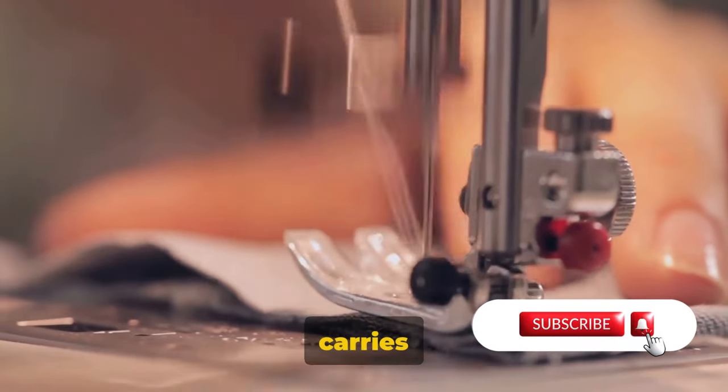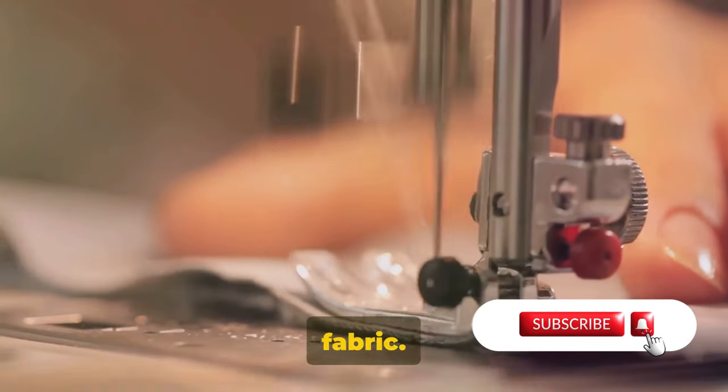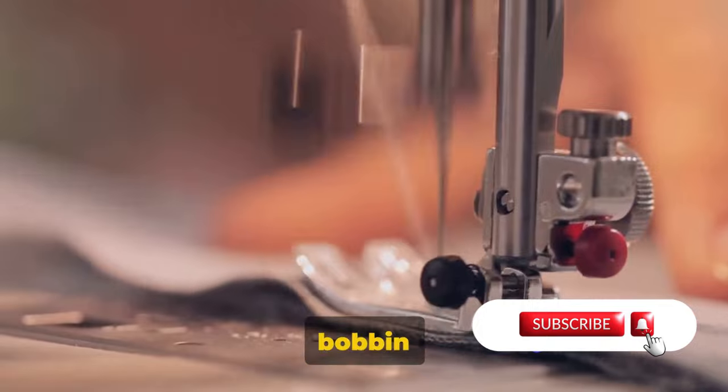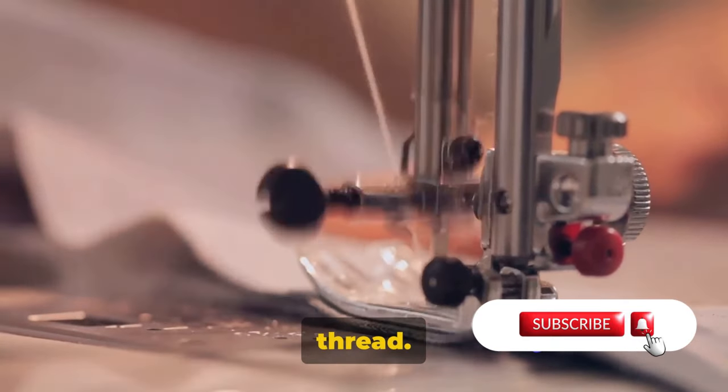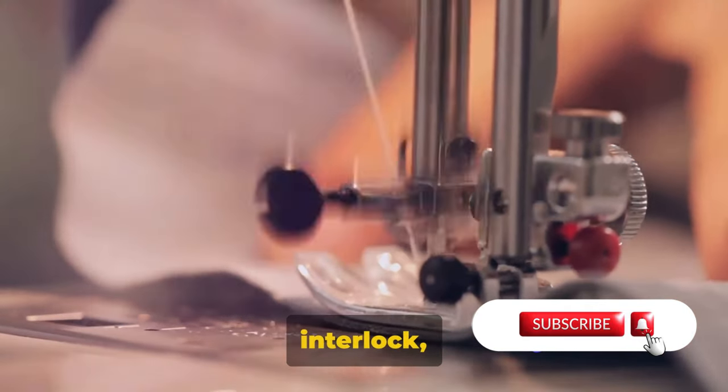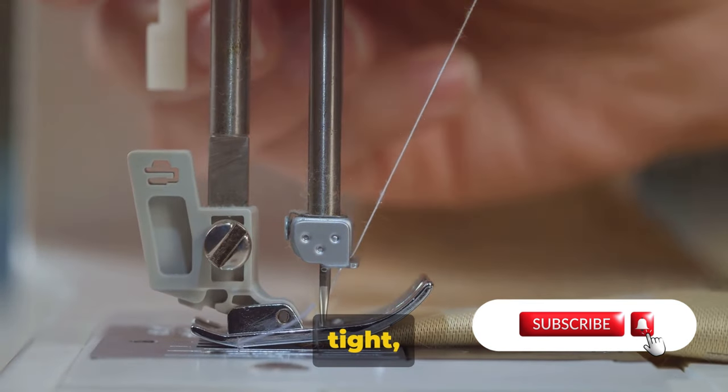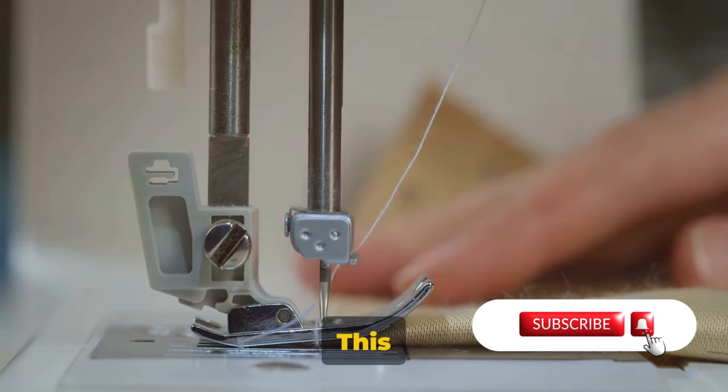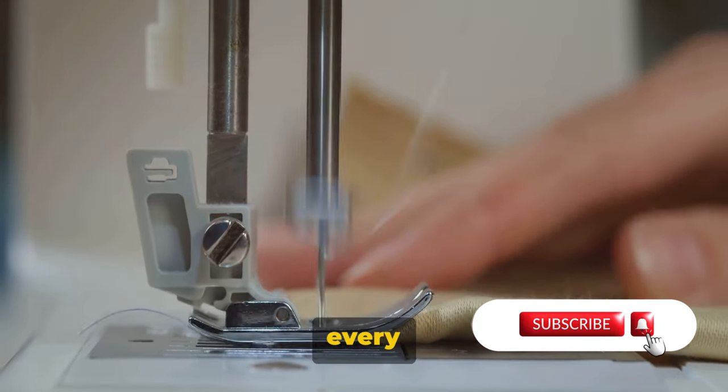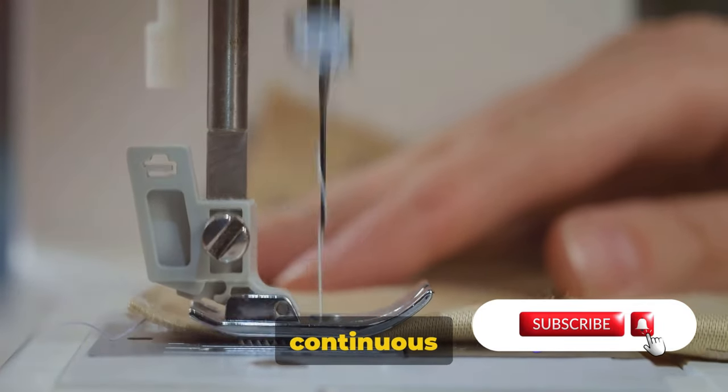As the needle descends, it carries the upper thread down into the fabric. At the same time, the bobbin spins, releasing the lower thread. The two threads then interlock, forming a stitch. As the needle rises, it pulls the threads tight, securing the stitch in place. This process repeats with every push of the pedal, creating a continuous line of stitches.